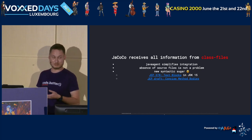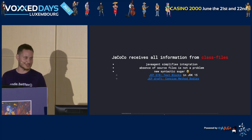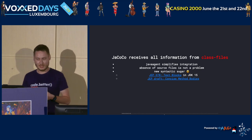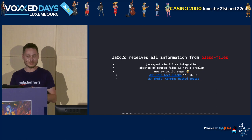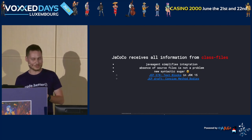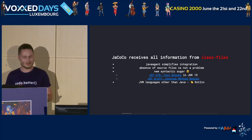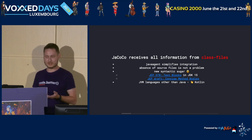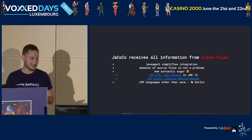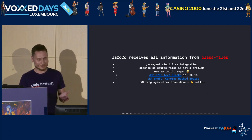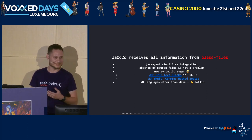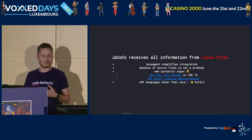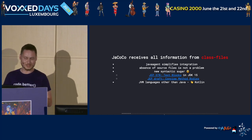New syntactic sugar appearing in a language is not a problem for us, because it's just syntactic sugar in source files — in class files, nothing changes. Features like text blocks, which appeared in JDK 15, don't change anything at the class files level. Initially, we thought this opens a big door for supporting JVM languages other than Java, for example Kotlin. This was partially true until some moment.